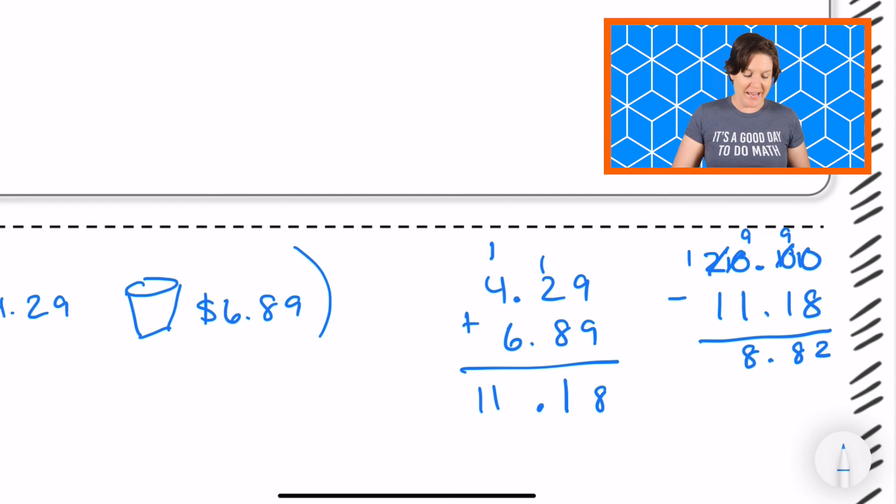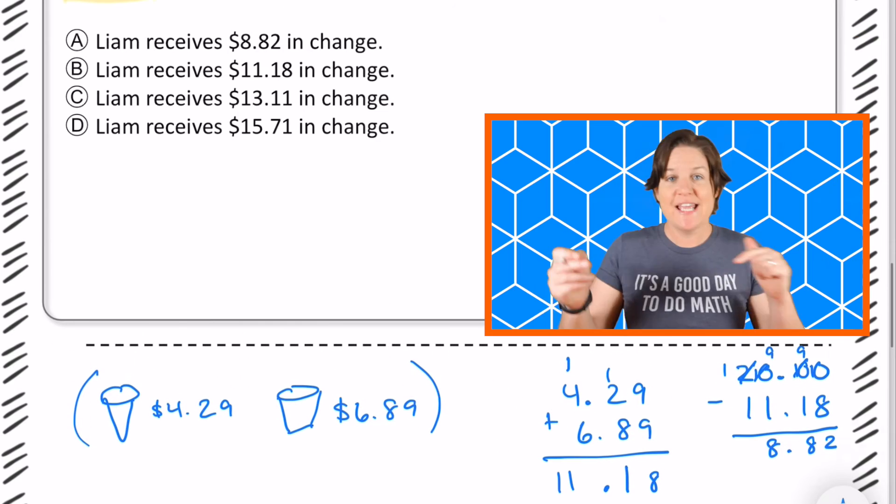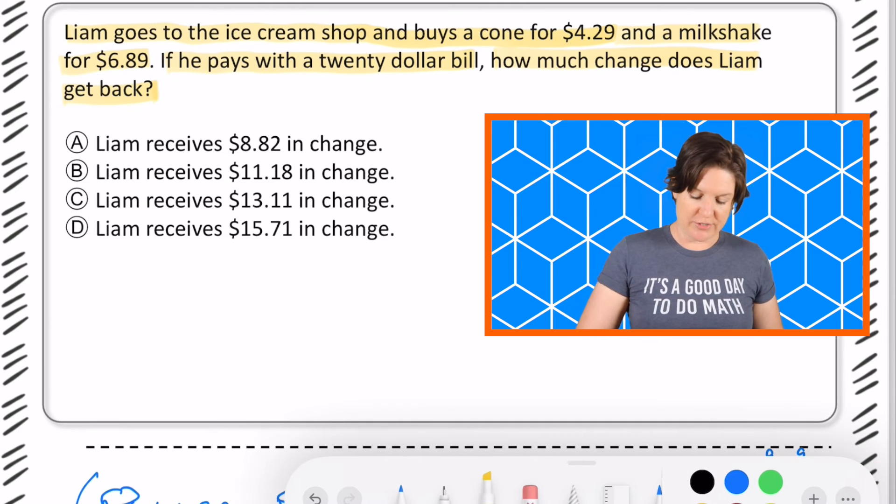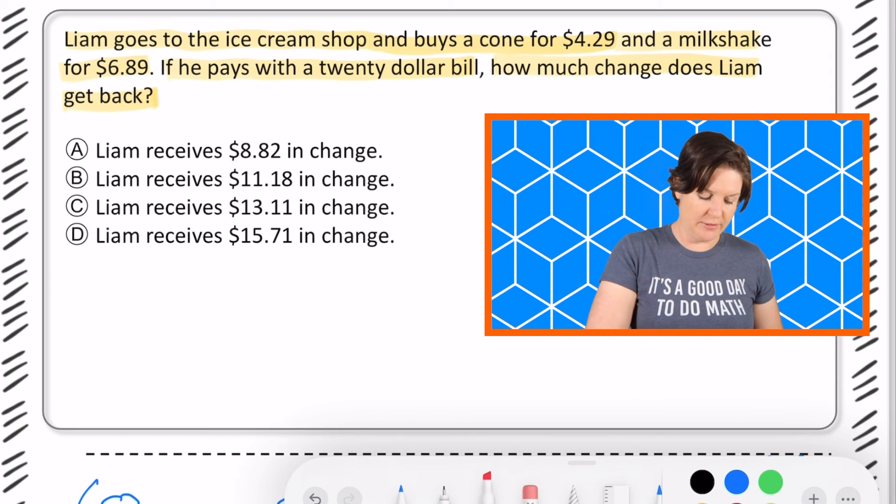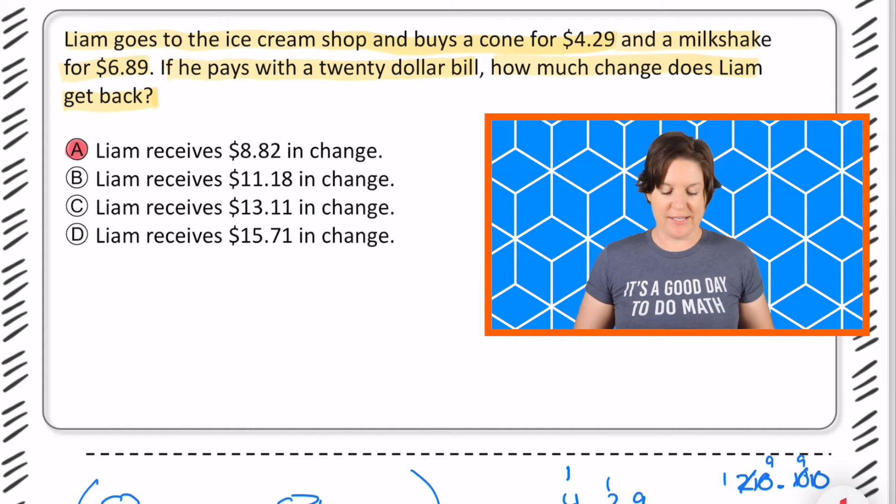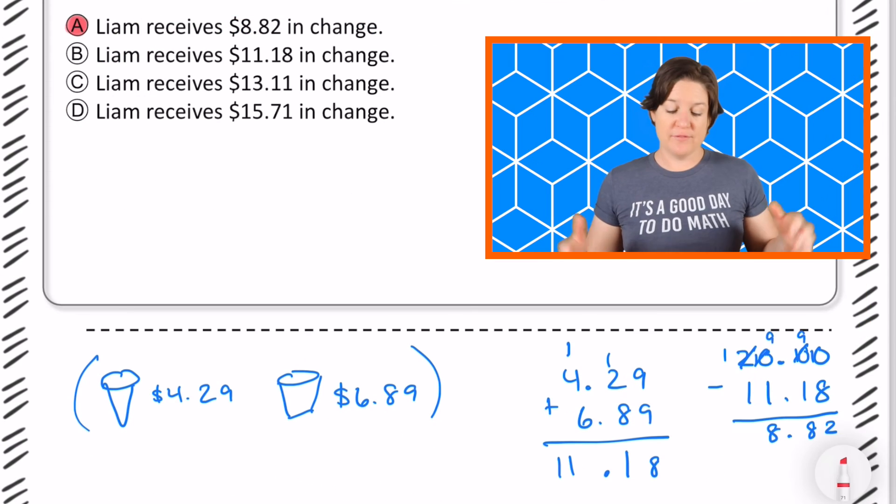And one minus one is zero. So we have $8.82 in change. So the correct answer is right here, A: Liam receives $8.82 in change. Go ahead and pause the video to jot down any notes that you still need to make.